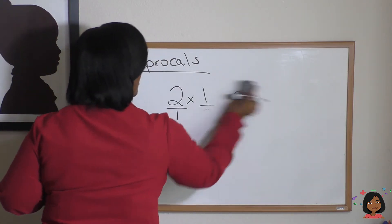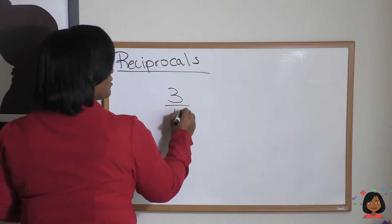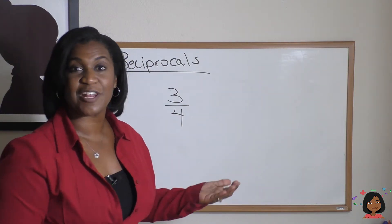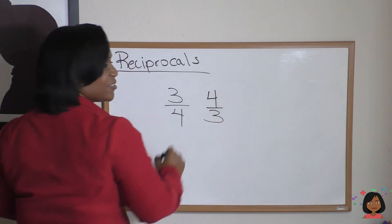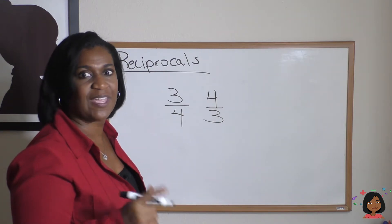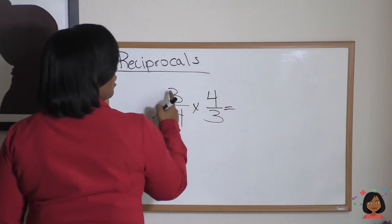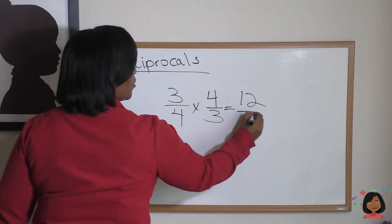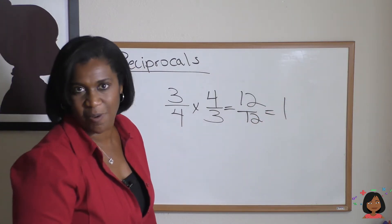How about this time? Let's choose the number 3/4. Well, what's the reciprocal? Go ahead and turn it upside down. The reciprocal is 4/3. Now let's multiply it to see if it gives us that same answer. 3/4 × 4/3: 3 × 4 is 12, 4 × 3 is 12. And look at that, 12/12 is still 1.